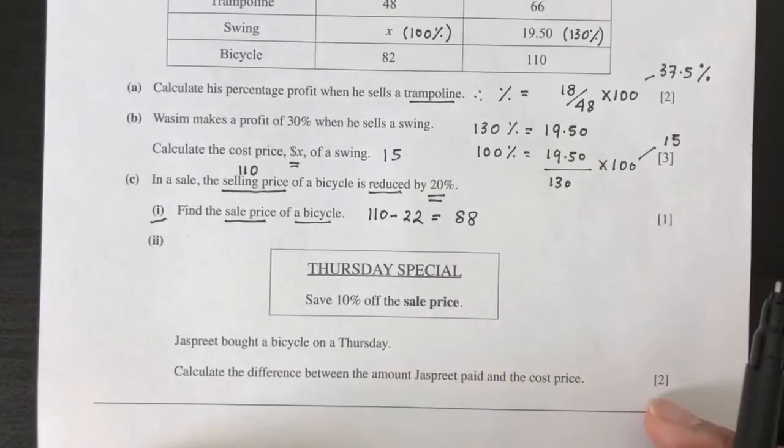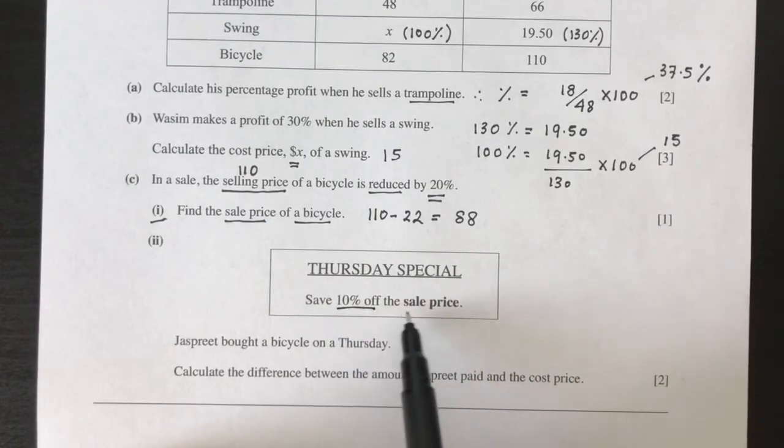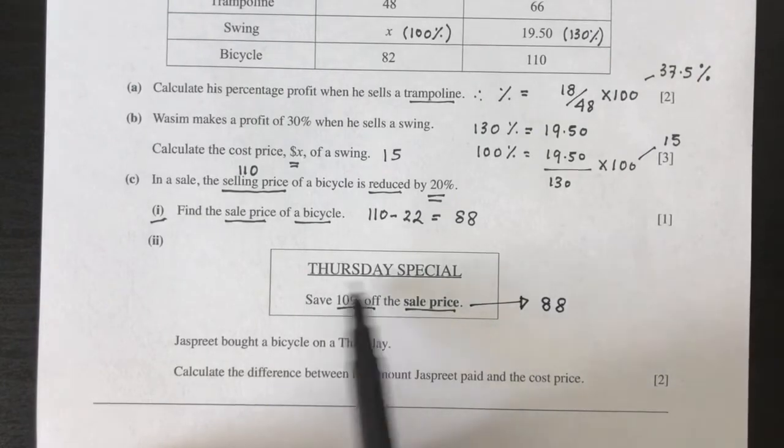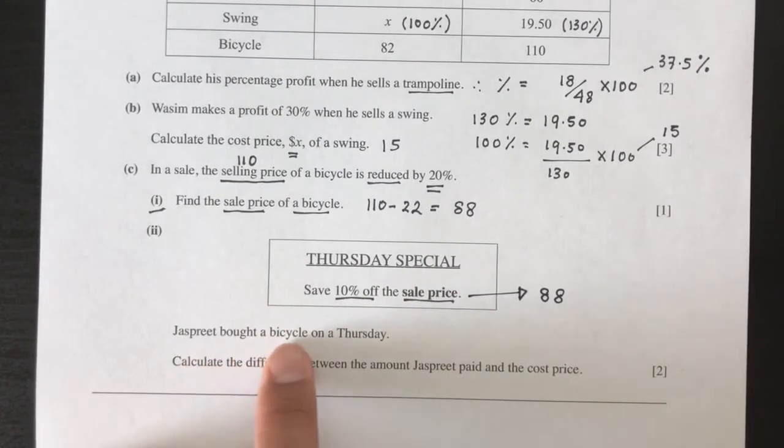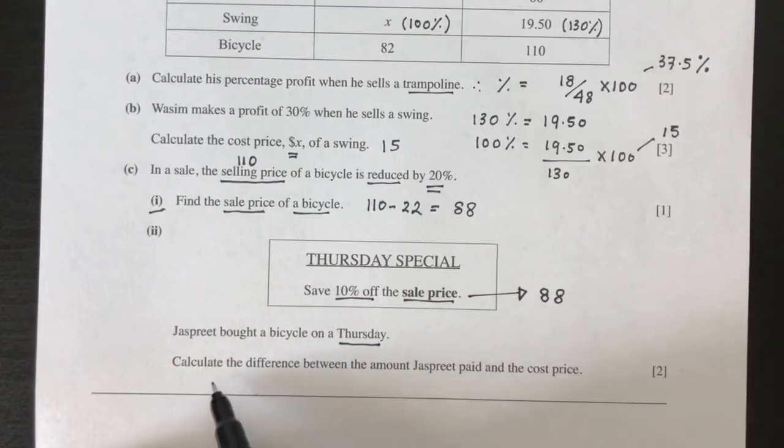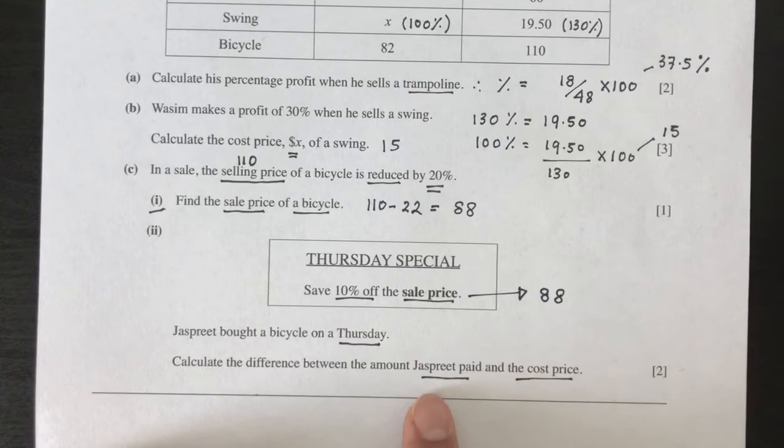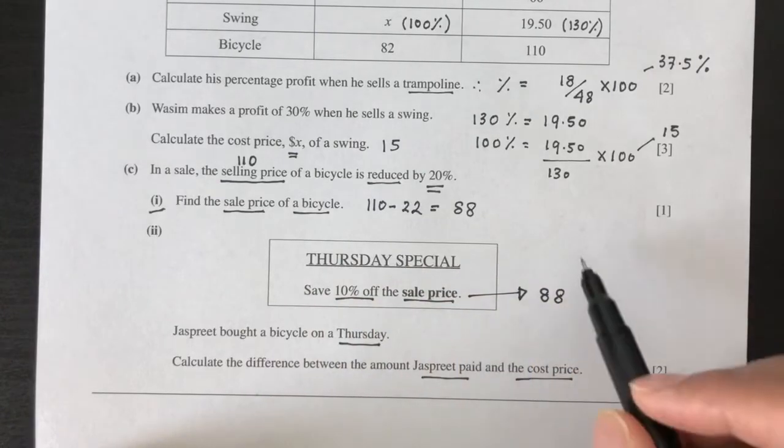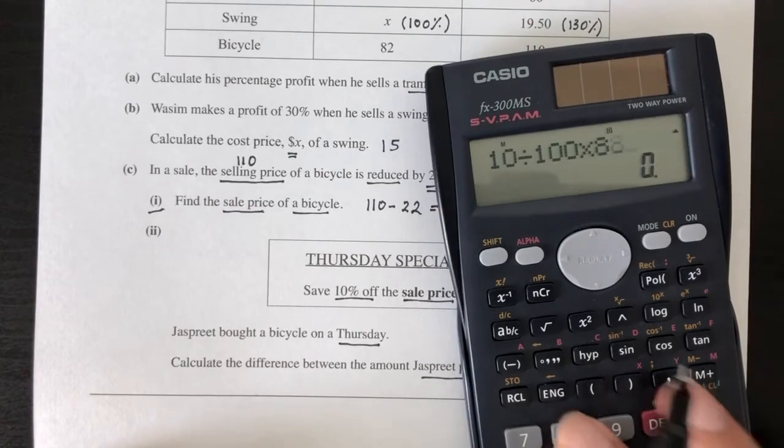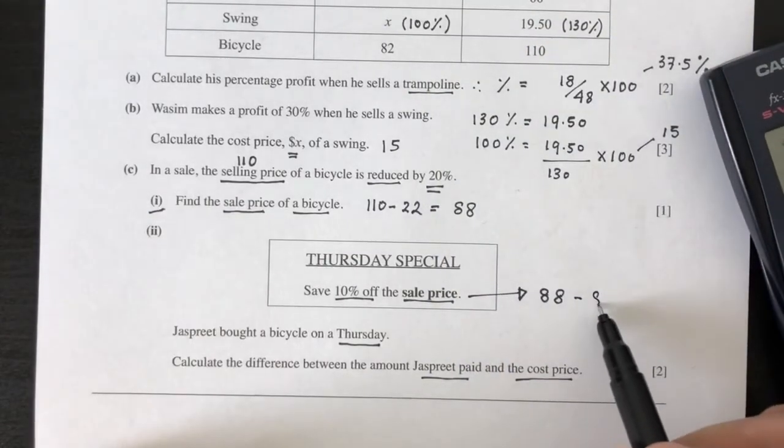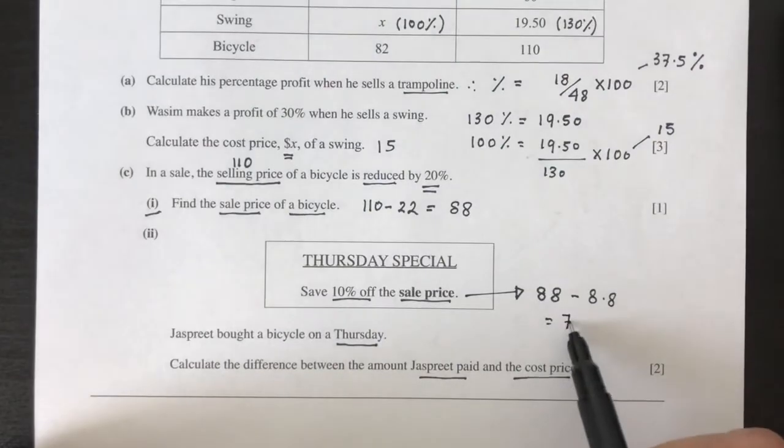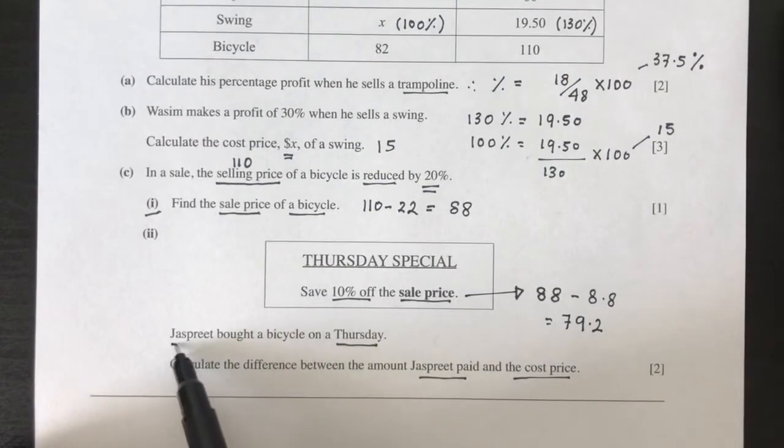Now for part 2, we have a Thursday special: save 10% off the sale price. Sale price you just found from part 1 is $88. You can save 10% off that again. Jaspreet bought a bicycle on a Thursday. Calculate the difference between the amount Jaspreet paid and the cost price. The amount he paid: you have to find the new price again, 10% off of that. 10% of 88, that will be your discount again. The new price will be 88 minus 8.8, that should be 79.2. That is the price that he bought the bicycle on Thursday.